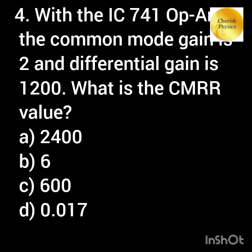With the IC741 op-amp, the common mode gain is 2 and the differential gain is 1200. What is the CMRR value?